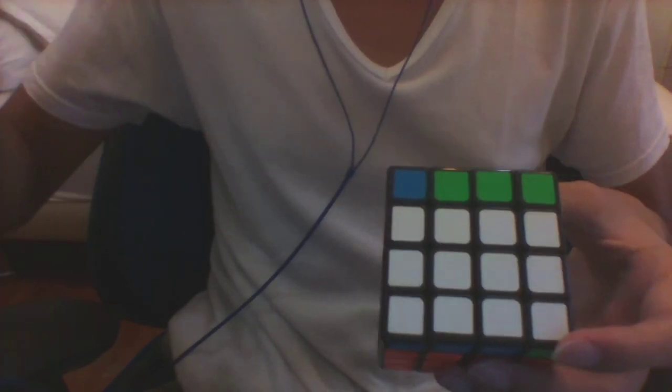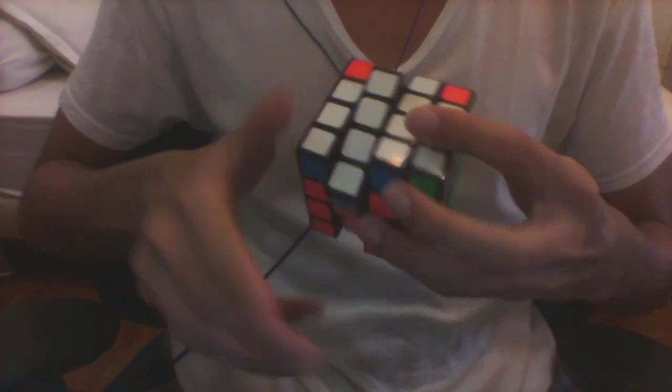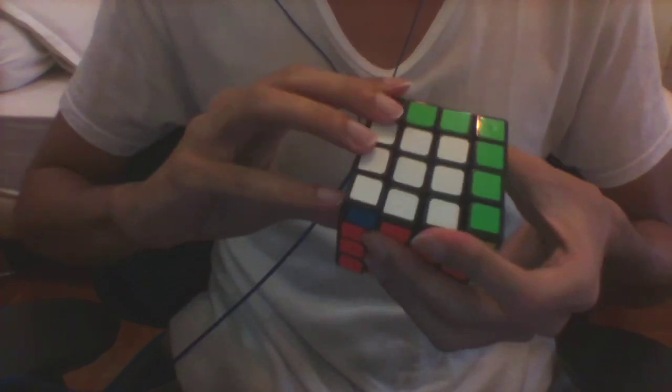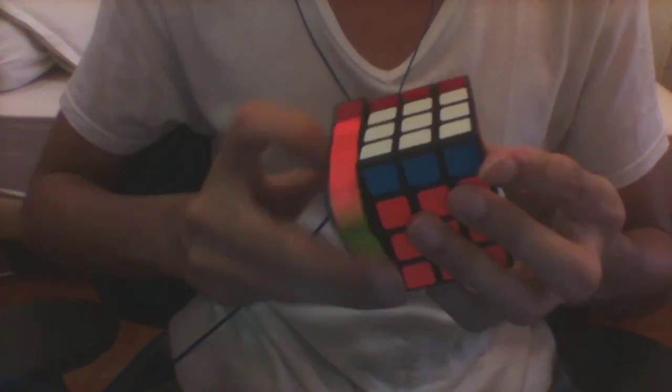That one is F, sexy move, then cancel into another OLL out. And then flip perm.